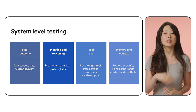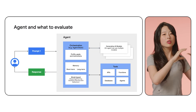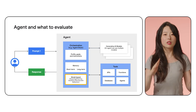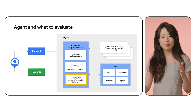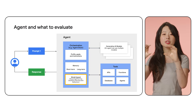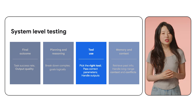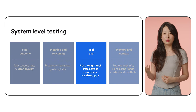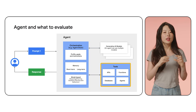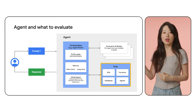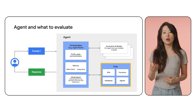The second thing to check is planning and reasoning — how did the model think? How does it break down complex goals logically, justify each step sensibly, and stay coherent over a long multi-turn task? The third thing to check is tool use: can it use tools effectively? Whether the model is picking the right tool, passing correct parameters, handling the outputs, avoiding redundant calls, and keeping latency and cost reasonable.